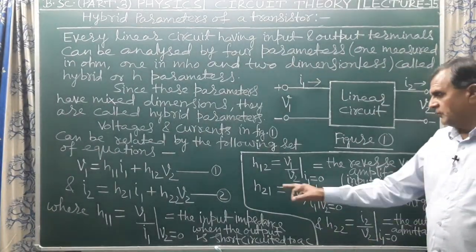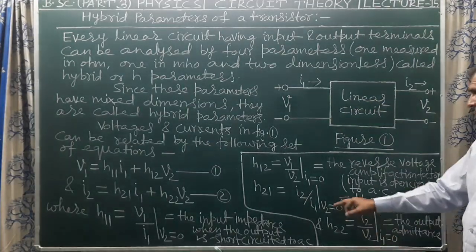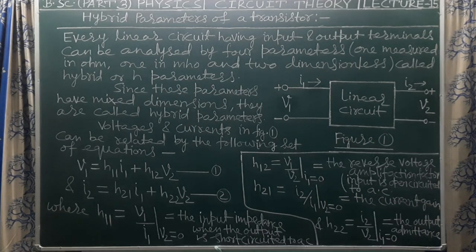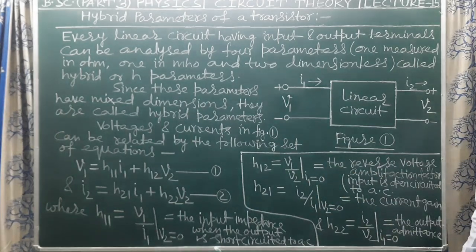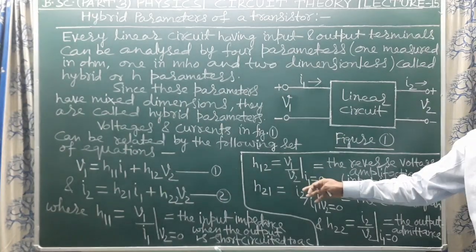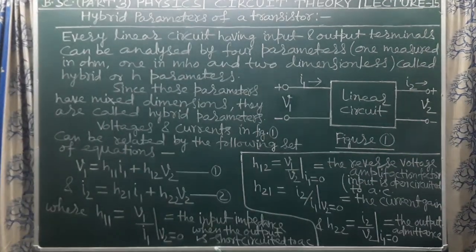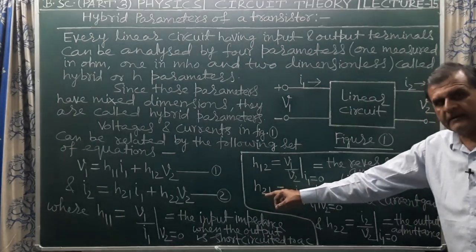The third hybrid parameter H21 is the ratio of output current I2 and input current I1 when output voltage V2 is equal to zero, that is when the output is short circuited to AC. It is the current gain I2 by I1 and is dimensionless. Similarly, H12 is also dimensionless because it is the ratio of input voltage V1 and output voltage V2. Hence both H12 and H21 are dimensionless.